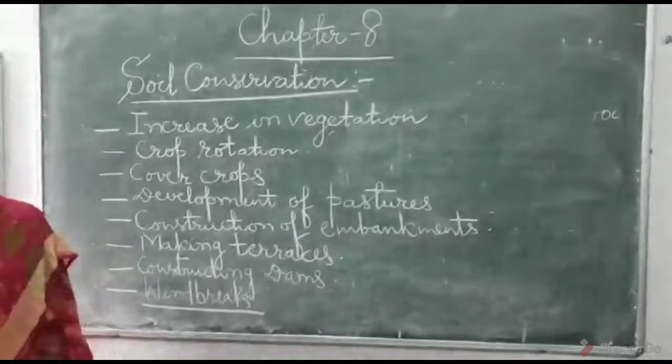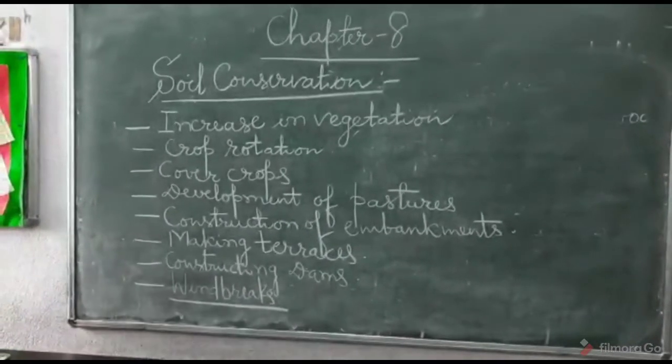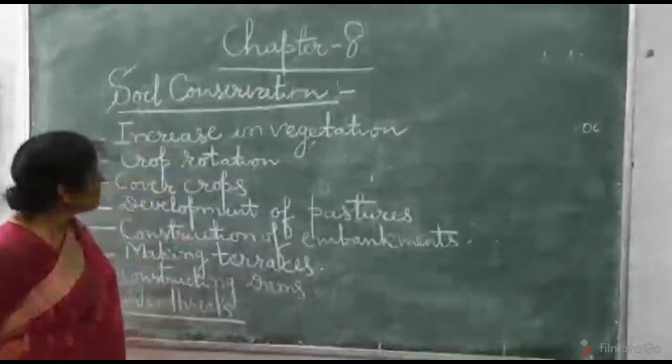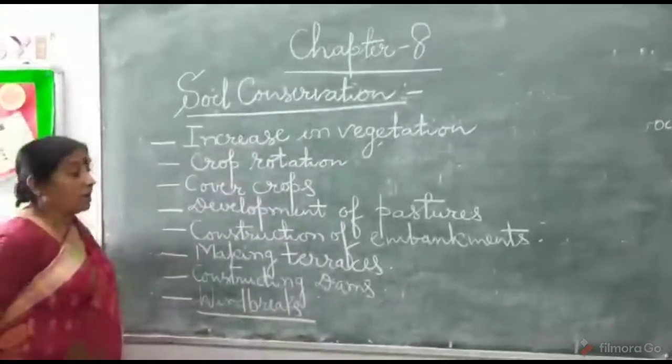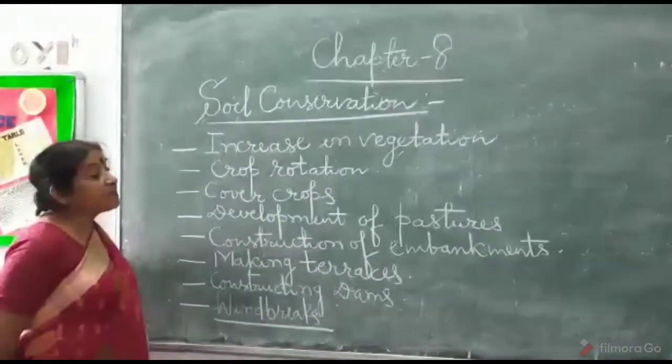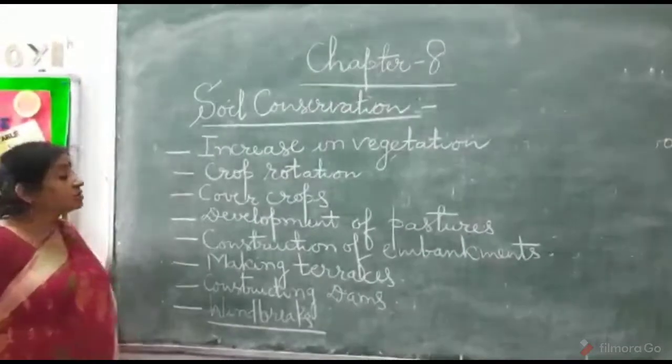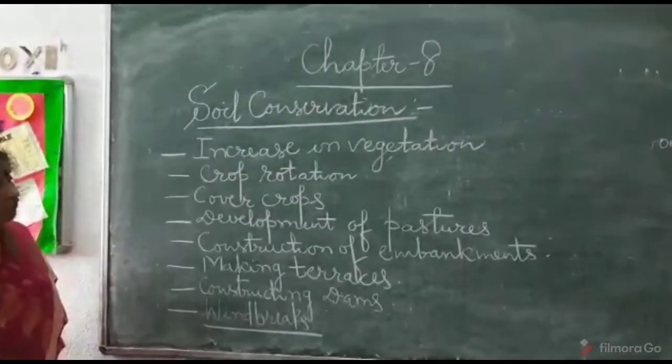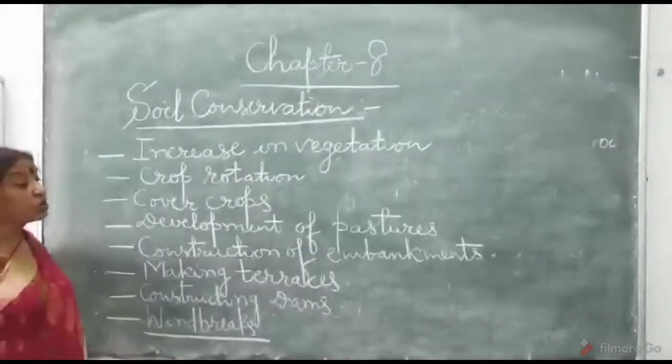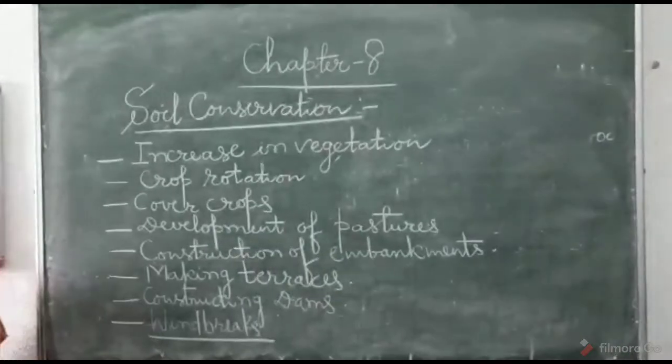Third is cover crops. Between harvesting one crop and planting the next crop, many times we leave the soil barren but we should not keep the soil barren because when the land is barren it may be easily eroded by wind and water. So we should use cover crops to cover the soil and the roots of the cover crops bind the soil. By that way we can protect the soil.